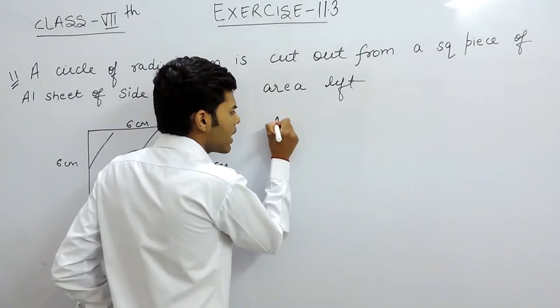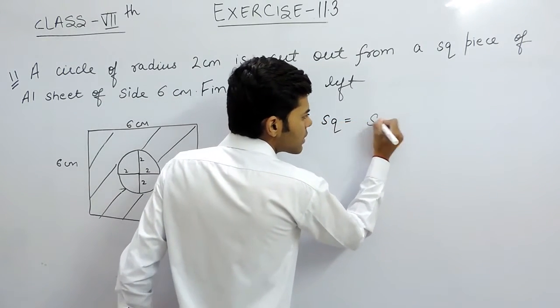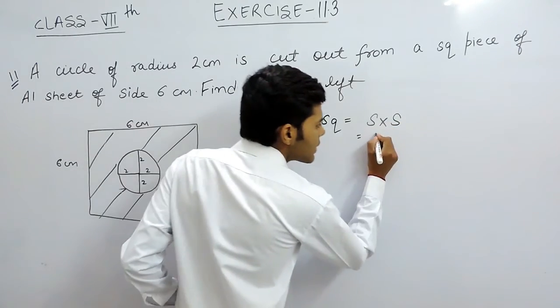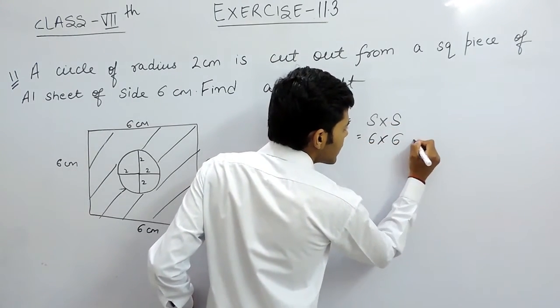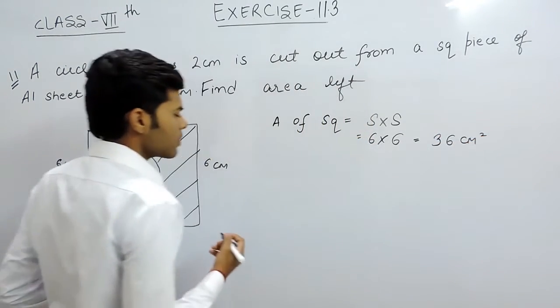So let's proceed. Area of square is equal to side multiplied by side, that will be equal to 6 multiplied by 6, that is 36 cm square.